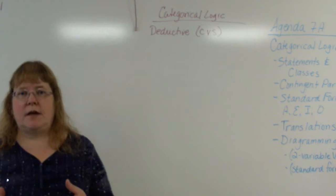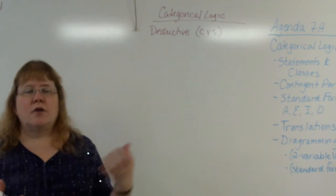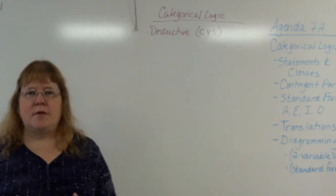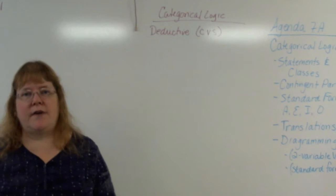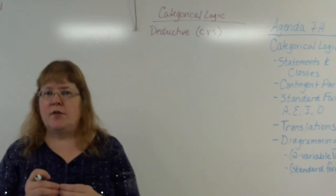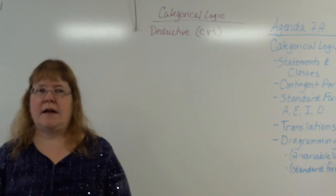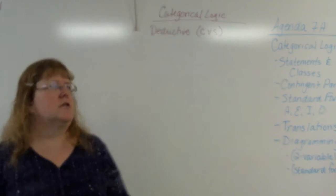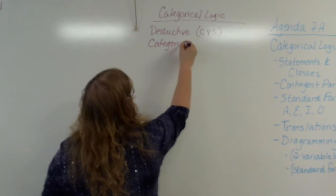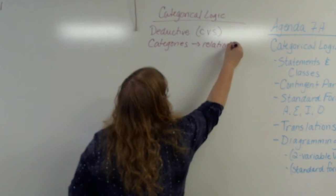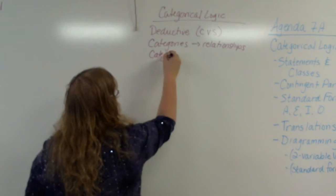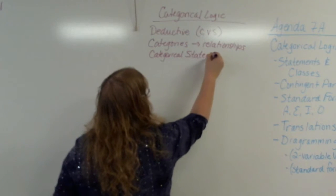Eventually we're going to get to Venn diagrams, a little bit different from truth tables. Our truth tables in Chapter 6 were very precise, with a lot of information we can quantify very precisely — it's either true or false. With categorical logic, we're looking at smaller bits of information in sentence structure, but bigger categories. Hence categorical logic: looking at categories of things and their relationships.